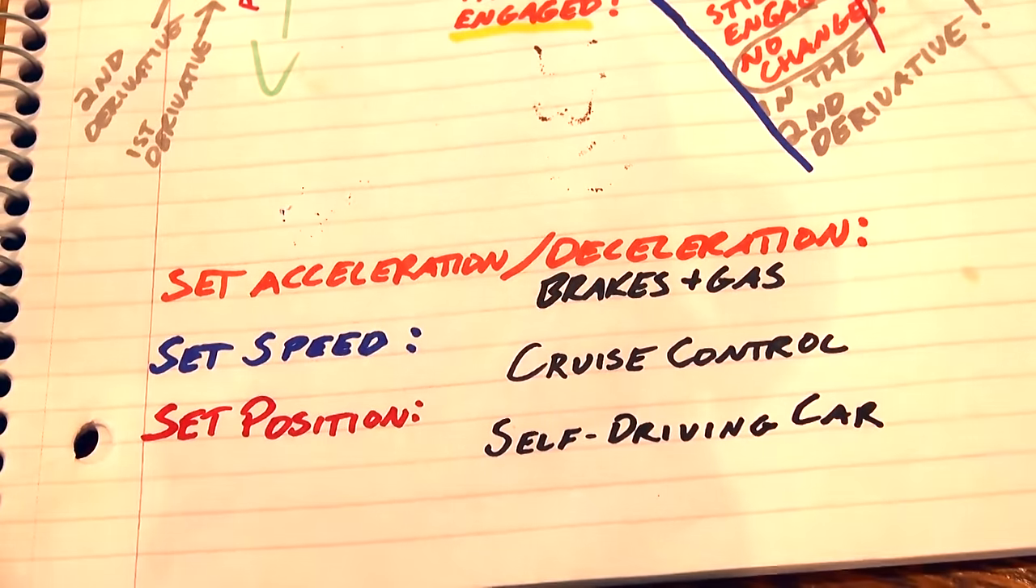But it's the second derivative that I care about. Because when you're driving, that's what you have control over. You can accelerate and decelerate using gas and brakes. That's it. Unless you've got some fancy cruise control that lets you directly input a speed, in which case you can sometimes work on a first derivative level. And someday we'll all be using self-driving cars where you just put in the position you want to go, and then they calculate the rest.